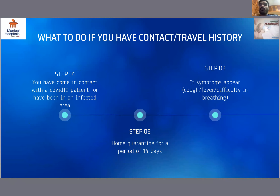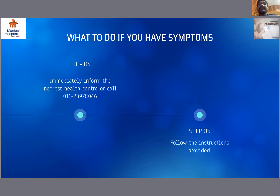If you have a contact or travel history, you have to home quarantine yourself for a period of 14 days. If any symptoms appear during this period — like cough, fever, or difficulty in breathing — immediately inform the nearest health center or call the national helpline number.